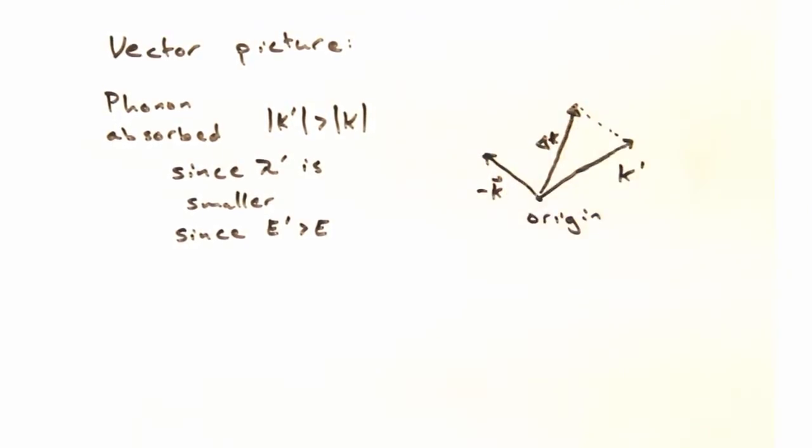If the final wavelength is shorter, that means that the magnitude of the final k vector, k prime, is going to be greater than the initial magnitude. So we can sketch that here on the right, where the magnitude of k is shorter than the magnitude of k prime. And we have delta k off slightly to this right angle here.